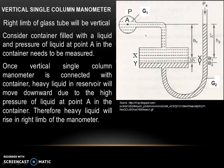The right limb of the glass tube is vertical for the vertical single column manometer. Consider a container filled with a liquid, and the pressure at point A in the container has to be measured. Once the vertical single column manometer is connected, heavy liquid in the reservoir will move downward by amount delta H due to the high pressure at point A, and hence the heavy liquid will rise in the right limb by amount H2.